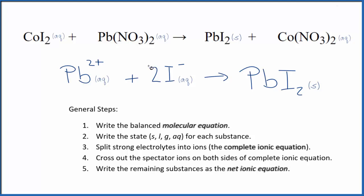Note that charge is conserved. We have 2+ here, and 2 times 1 minus, that's 2 minus. So those cancel out — net charge of 0. Over here, this is neutral, it has a net charge of 0 as well. So charge is conserved, and if you count the atoms up, they're balanced too.